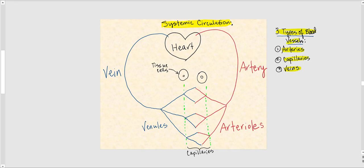This diagram shows the systemic circulation. It all begins with the heart, which functions as a pump. Arteries deliver blood away from the heart — think of 'A' for artery as 'away.' Blood leaves the heart through an artery and then branches into smaller and smaller arteries until we get to the smallest arteries called arterioles.